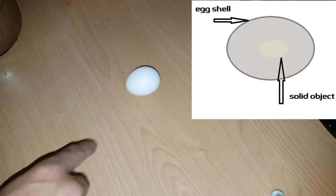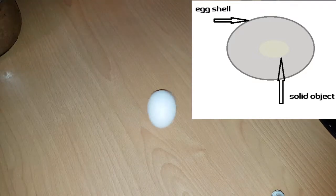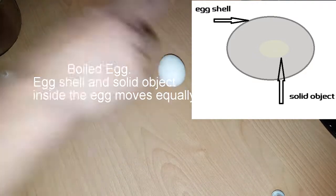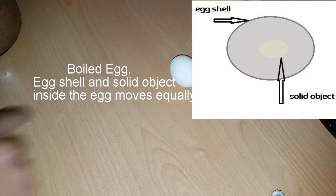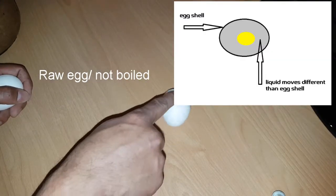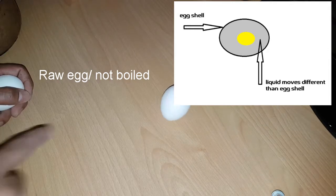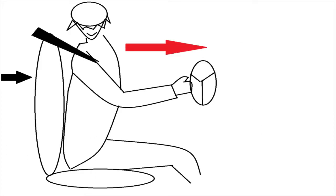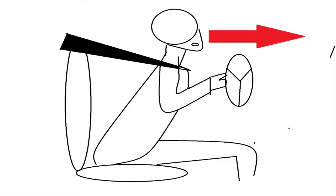The boiled egg has a solid object inside that moves at the same speed as the eggshell. However, the raw egg contains liquid inside. In this case, the eggshell plays the role of a car and the liquid inside plays the role of the car passenger. When the car is moving, the passenger and car reach the same speed, but suddenly braking stops the car immediately.